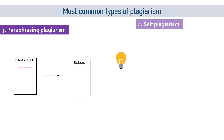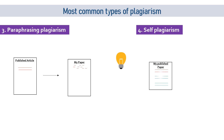The fourth type of plagiarism is self-plagiarism. What if you are writing a piece of work similar to what you have previously published? Or what if you want to include your published paper in your thesis? When your manuscript is checked for plagiarism, the software searches all existing online resources, and even if it is your own previously published article, it will consider it plagiarized.